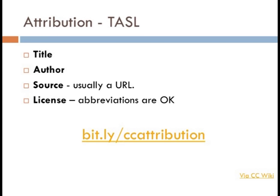If you ever have a question about whether your work qualifies as commercial use or not, most of the time your easiest option is just to contact the licensor. Most people who use CC licenses do it in good faith. It's the same with attribution — if you have a question about how they'd like to be attributed, whether they want the URL included, the easiest option is just to drop them a note. We have a page with more information at bit.ly/ccattribution.